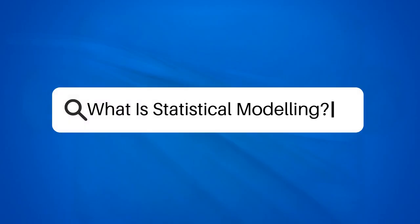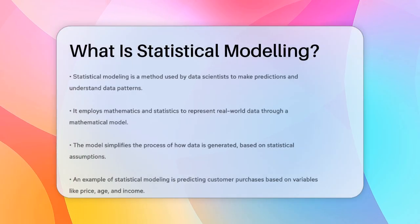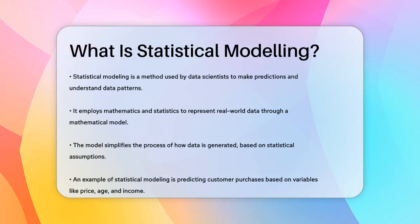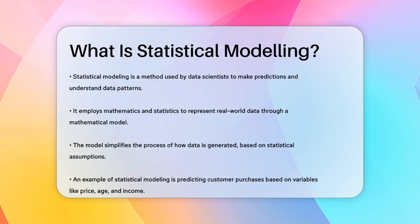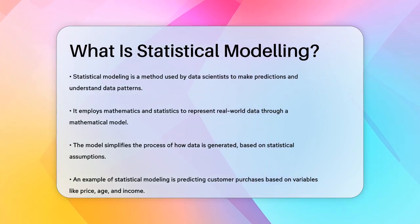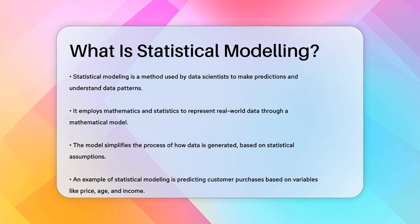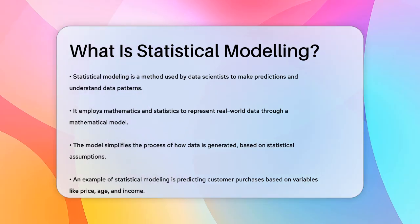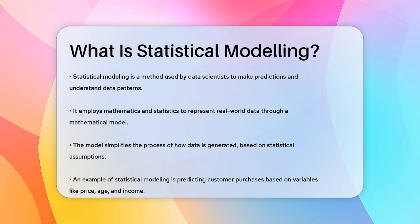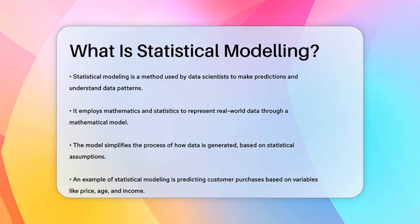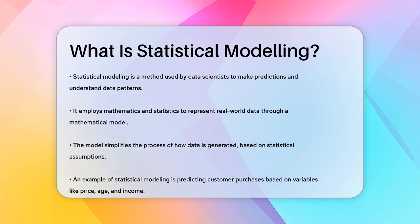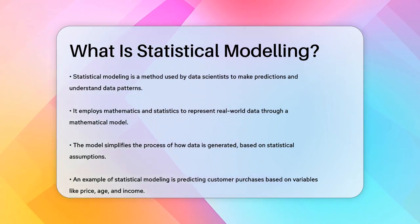What is statistical modeling? Have you ever wondered how data scientists make predictions about the future or understand complex patterns in data? It all starts with something called statistical modeling. Statistical modeling is a way to use mathematics and statistics to represent real-world data. It involves creating a mathematical model that describes how data is generated, often simplifying the real-world process. This model is essentially a set of statistical assumptions about the data.